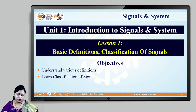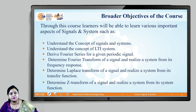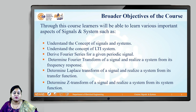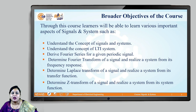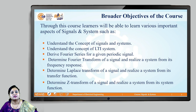In this course of Signals and Systems, the learner will be able to learn various important aspects of signal and system, like the concepts of signals and systems, the concept of linear time invariant systems. After this, we will derive the Fourier series for a given periodic signal and determine the Fourier transform of a signal and realize a system from its frequency response. This course will also focus on learning the Laplace transform of a signal and realize a system from its transfer function, and determine the Z transform of a signal and realize a system from its system function.